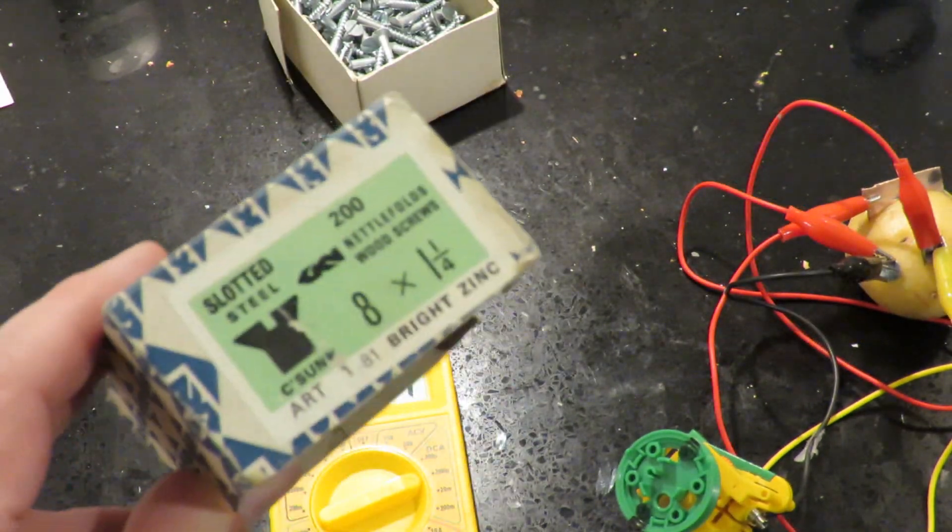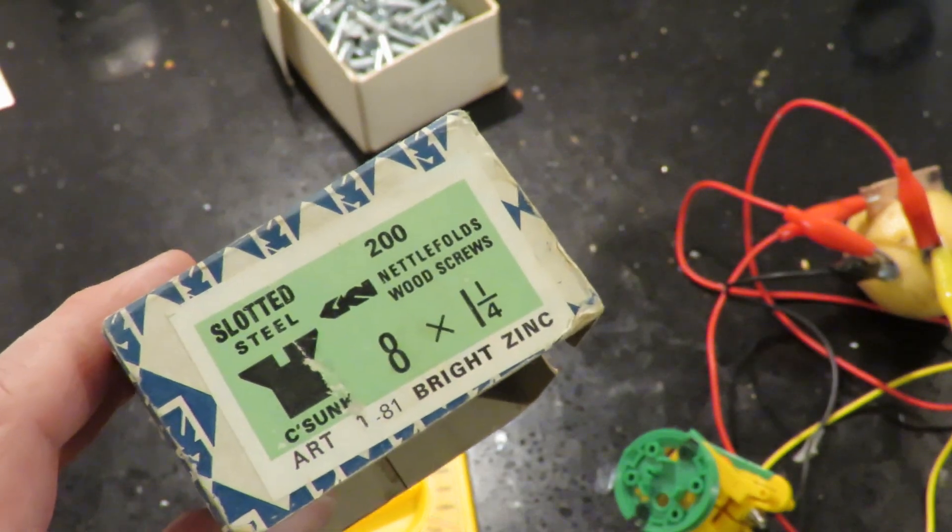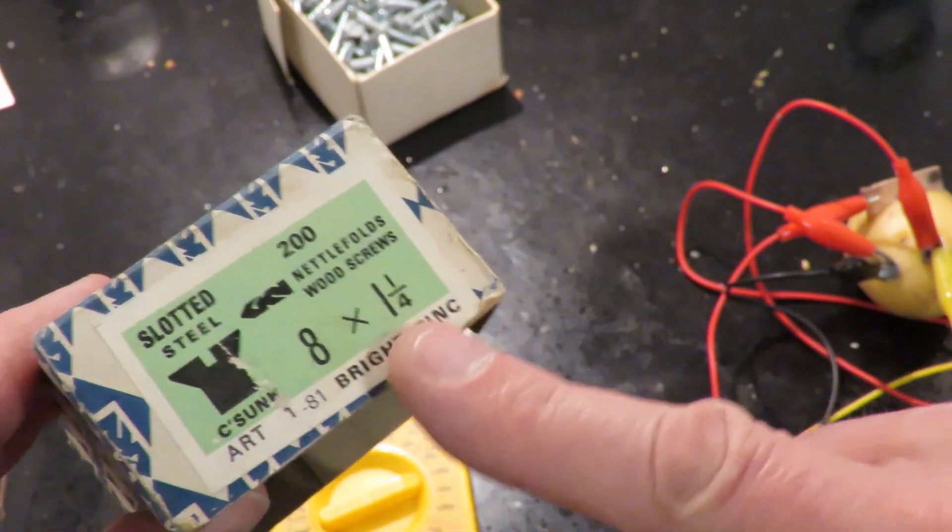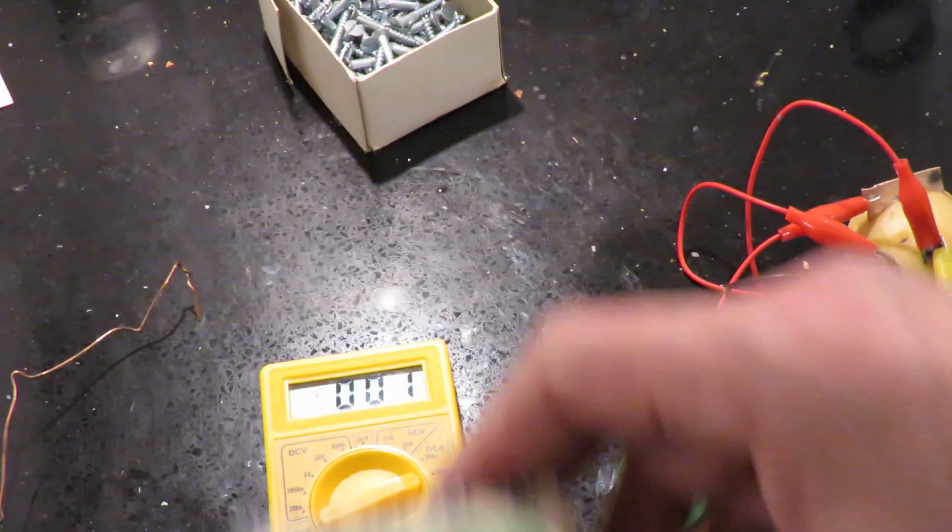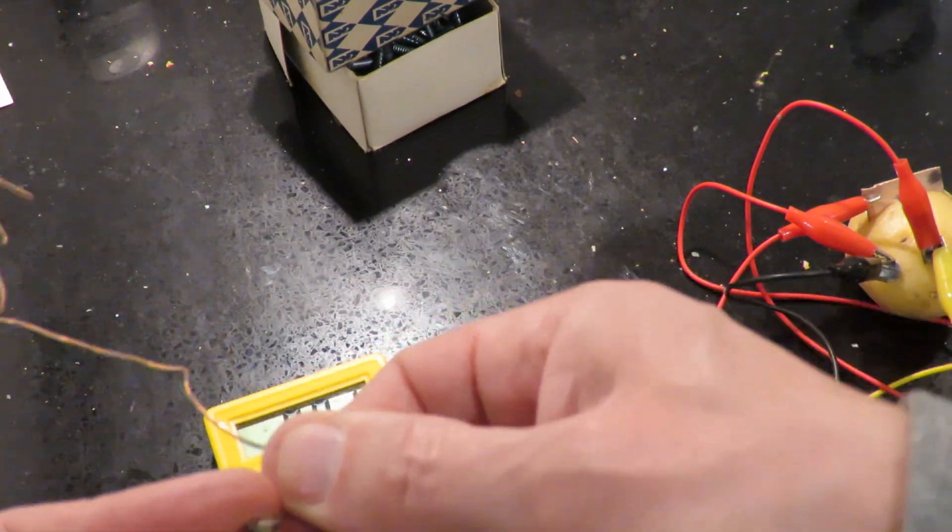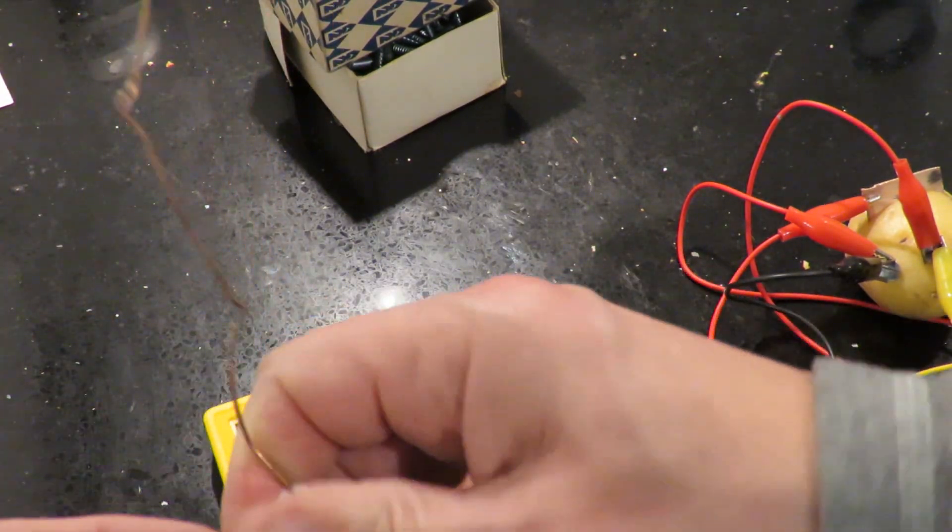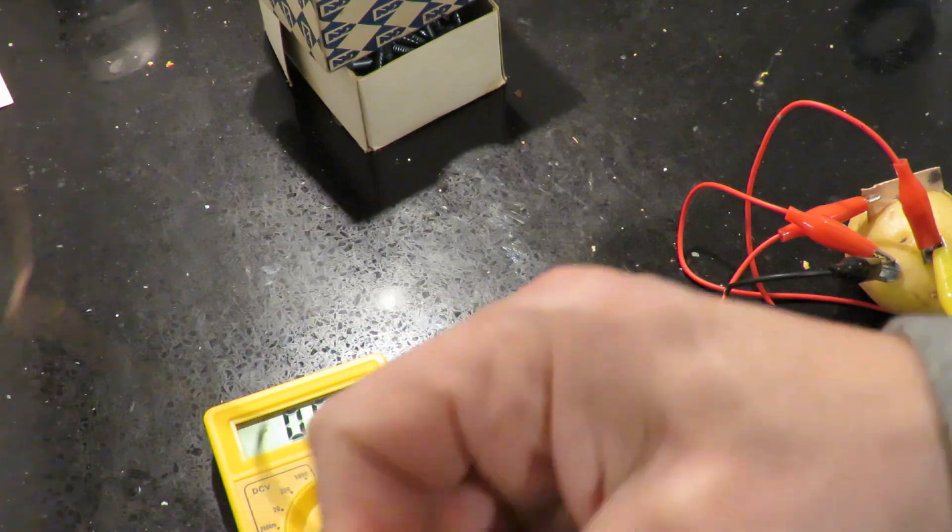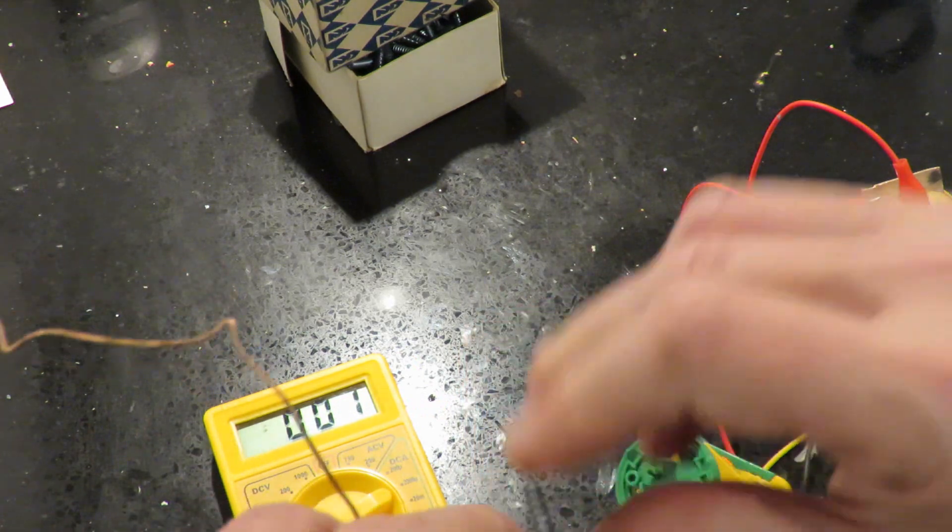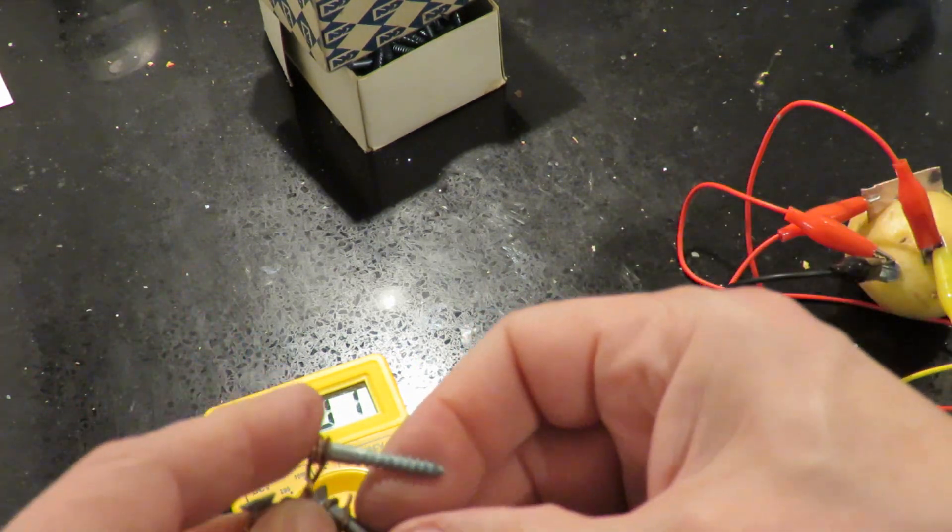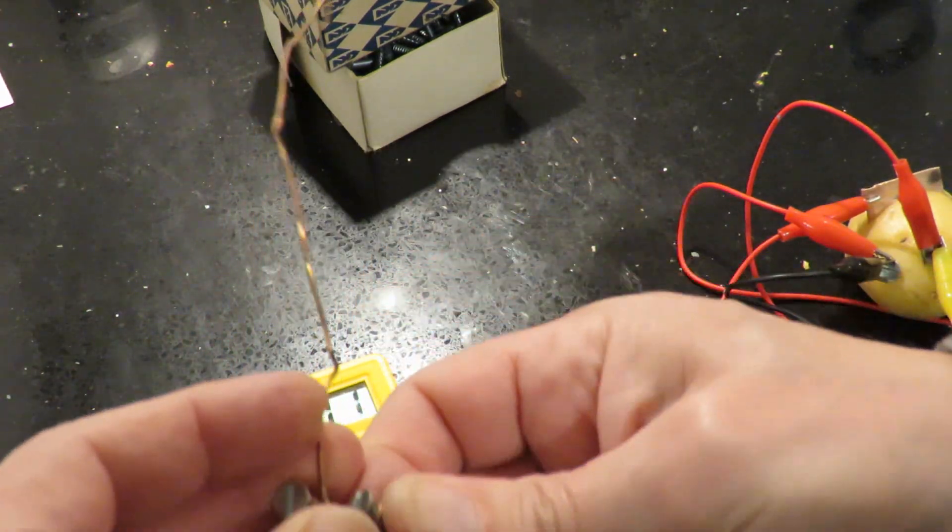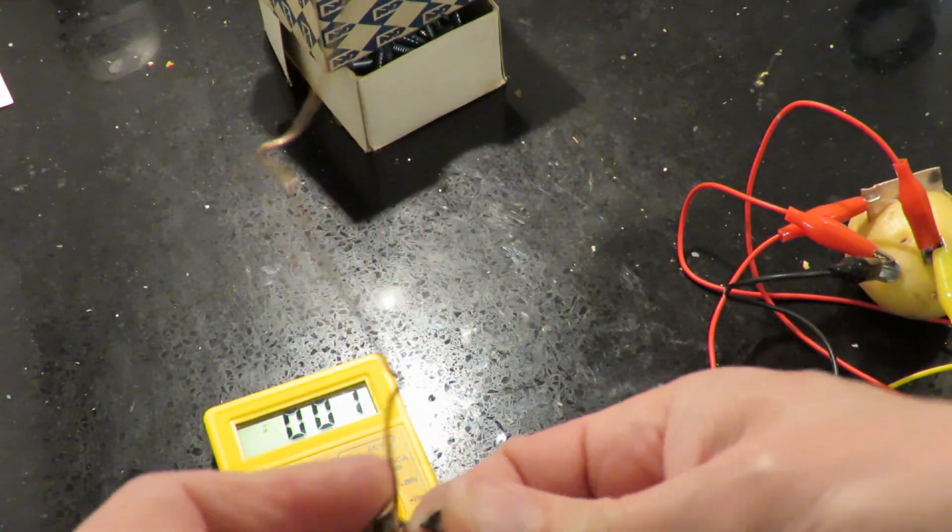While we're waiting, these are the screws I'm using. Bright zinc. So that just means they're steel screws with zinc plating. I've just got three of them ready there. Just wrap some copper wire around them and I'll push them straight into the potato when it's finished boiling. So that'll be the same as the three that were in there. I've only got one copper plate so I'll have to pull that one out and push it in the other one.